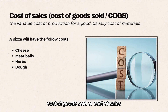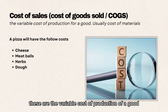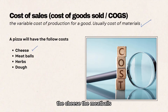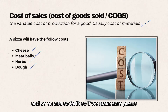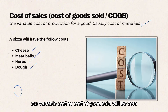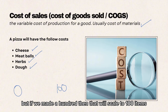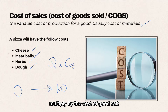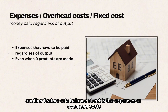Cost of goods sold, or cost of sales, refers to the variable costs of production and is usually the materials. For instance, a pizza will have variable costs such as cheese, meatballs, herbs, and dough. If we make zero pizzas, the cost of goods sold will be zero, but it scales with output. Cost of goods sold is calculated as quantity multiplied by the cost per unit.